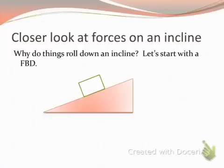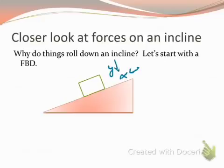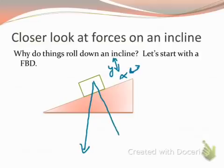Let's start with an object on an incline and ask the question: why is it that things roll down an incline? So let's start with our free body diagram. Just like you saw in the video prior, we can define our x-axis and our y-axis relative to the surface of the incline. When I draw the weight of the object, it still acts straight down, but now it's at an angle relative to my x and y, so I'm going to break it into components.